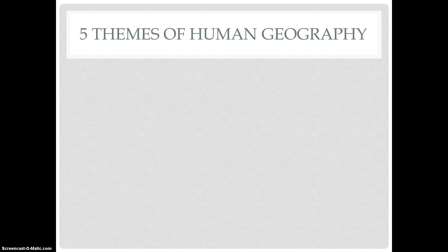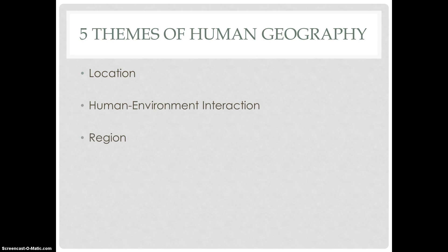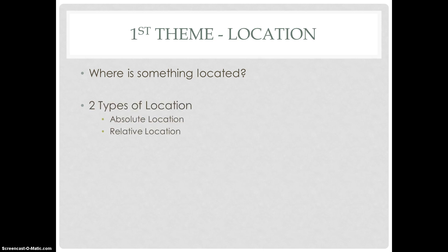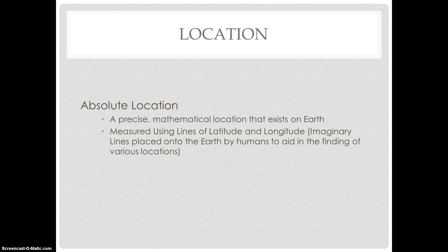There are five themes of human geography: location, human-environment interaction, region, place, and movement. The first theme is location. The big question is: where is something located? There are two types of location — absolute location and relative location — and two ways to describe location: site and situation. Absolute location is a precise mathematical location on Earth, measured using lines of latitude and longitude, which are imaginary lines placed on the earth by humans to aid in finding various locations.